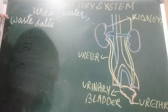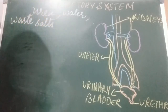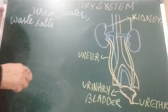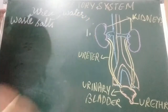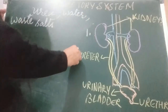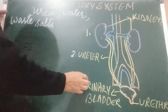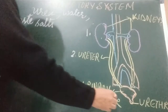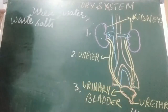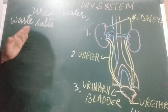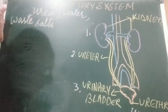These three things — urea, excess water, and waste salts — are removed from our body. The excretory system in humans consists of the following organs: first is a pair of kidneys, second is a pair of ureters, third is the urinary bladder where urine gets collected, and fourth is the urethra from where urine is expelled out.